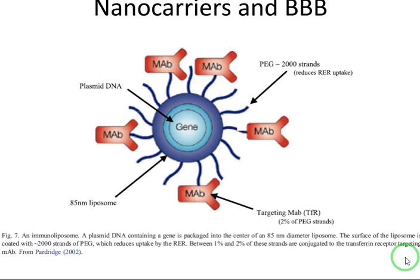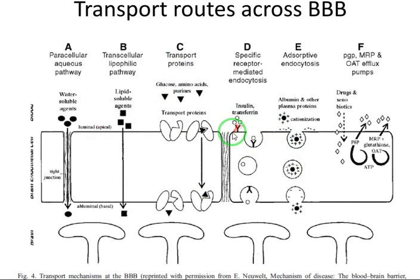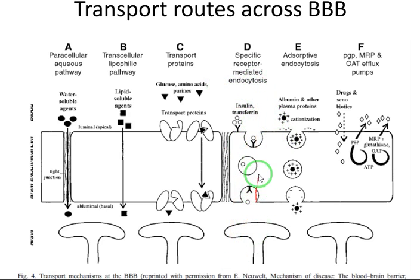As the final strategy, we want to discuss how we can design nanocarriers that can cross the blood-brain barrier. If you remember, we said there are some transferrins expressed on the surface of the endothelial cells, and if a molecule that wants to cross the blood-brain barrier binds to it, it will undergo receptor-mediated transcytosis.